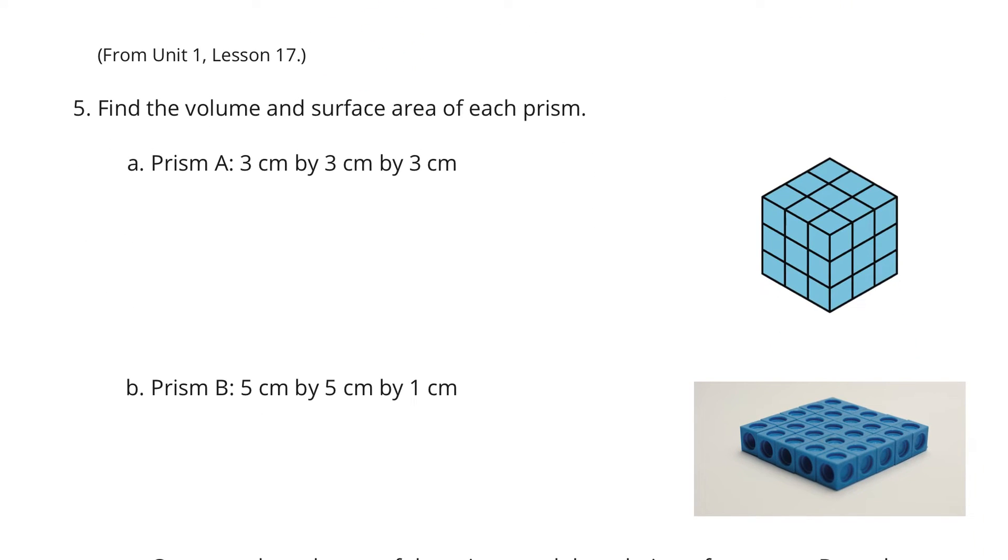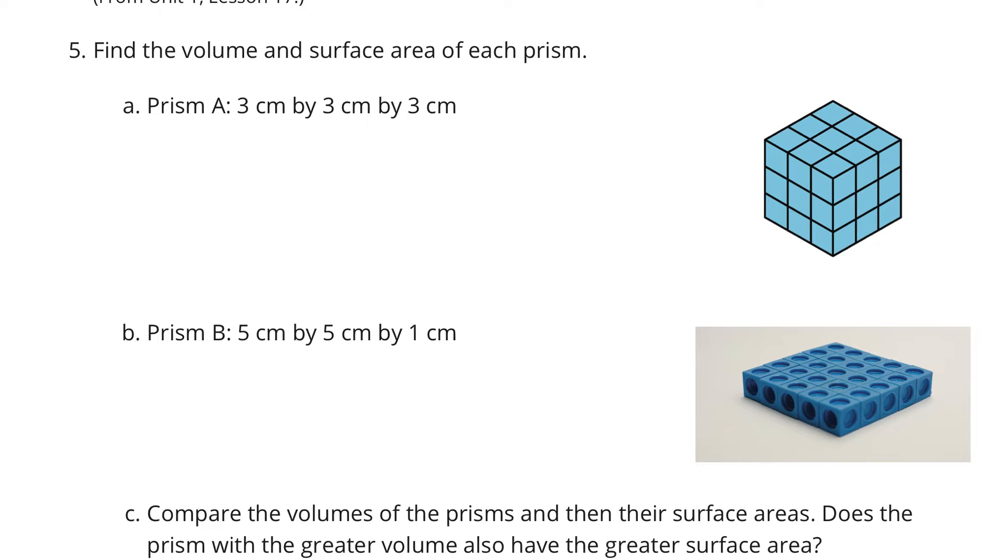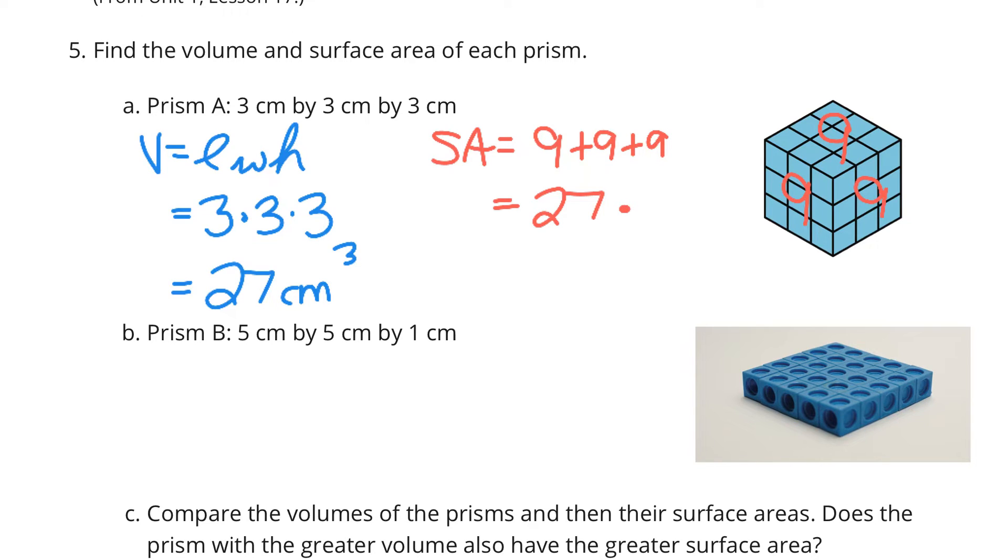Next, question 5. Find the volume and surface area of each prism. Prism A, as we see here, is 3 by 3 by 3. And so, for the volume, is equal to our length, times our width, times our height. That's going to be 3, times 3, times 3. 3 times 3 is 9, times 3 is 27 cubic centimeters. But what about the surface area? Well, this face is 9, 9, and 9. And so, if I take my 9 plus 9 plus 9, I once again get 27, but that's only half of the faces. So, if I then multiply it by 2, I will get a solution of 54 square centimeters.